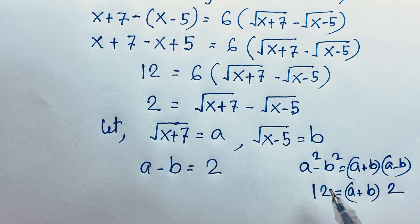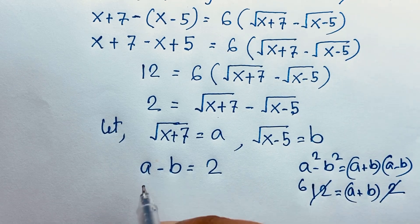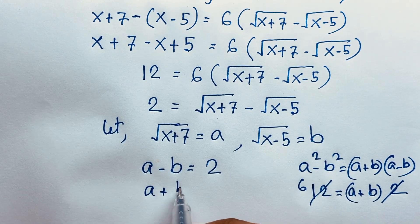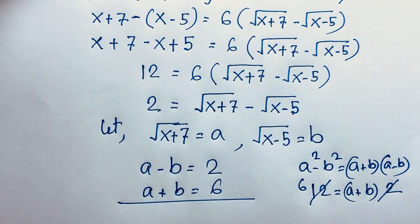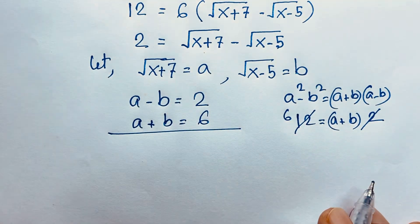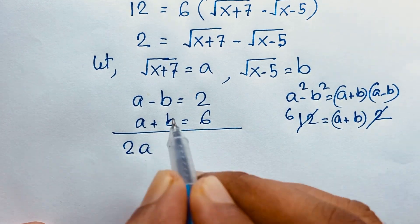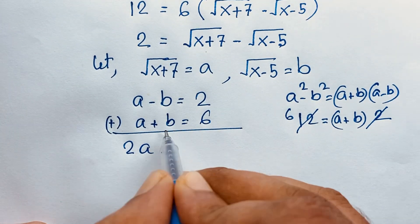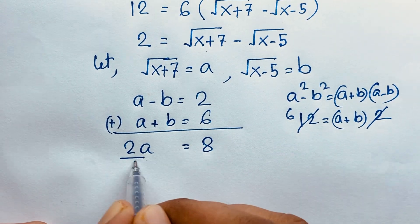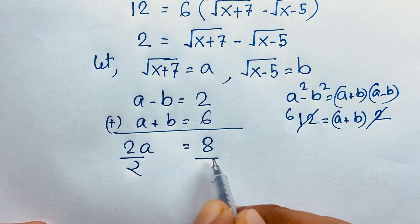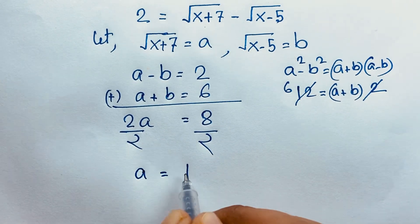So: 12 divided by 2 equals 6. Therefore a plus b equals 6. Now I add both equations. a plus b equals 6 and a minus b equals 2. Adding: a plus a gives 2a, the b terms cancel, and 2 plus 6 equals 8. Dividing both sides by 2, we find a is equal to 4.